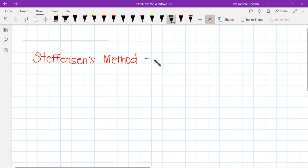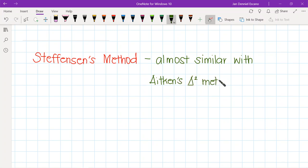Steffensen's method is almost similar to Aitken's delta square method. In the process, it's also almost equal with Aitken's delta square method.